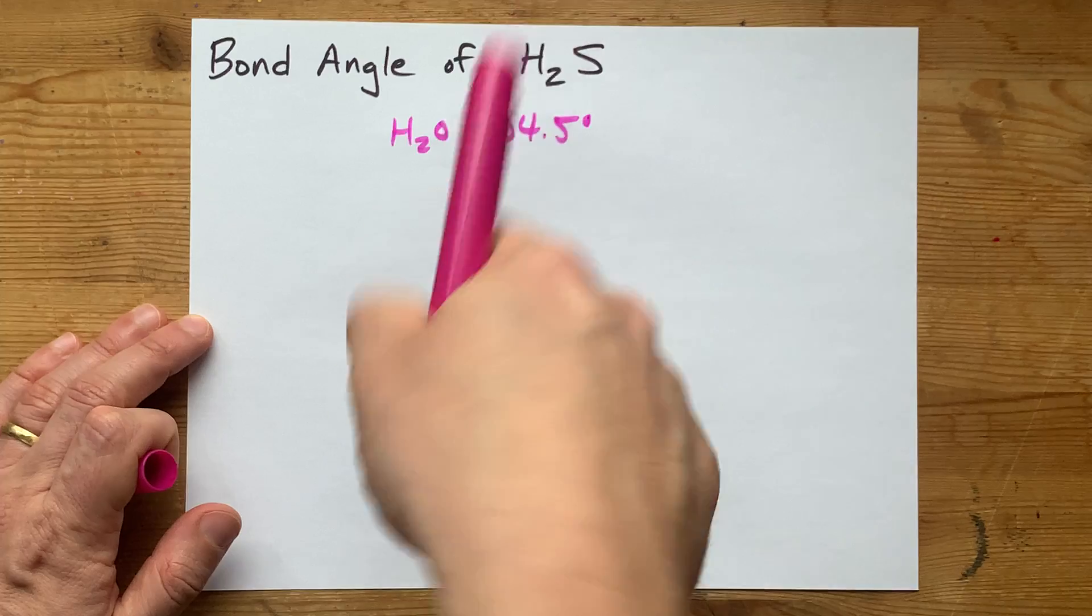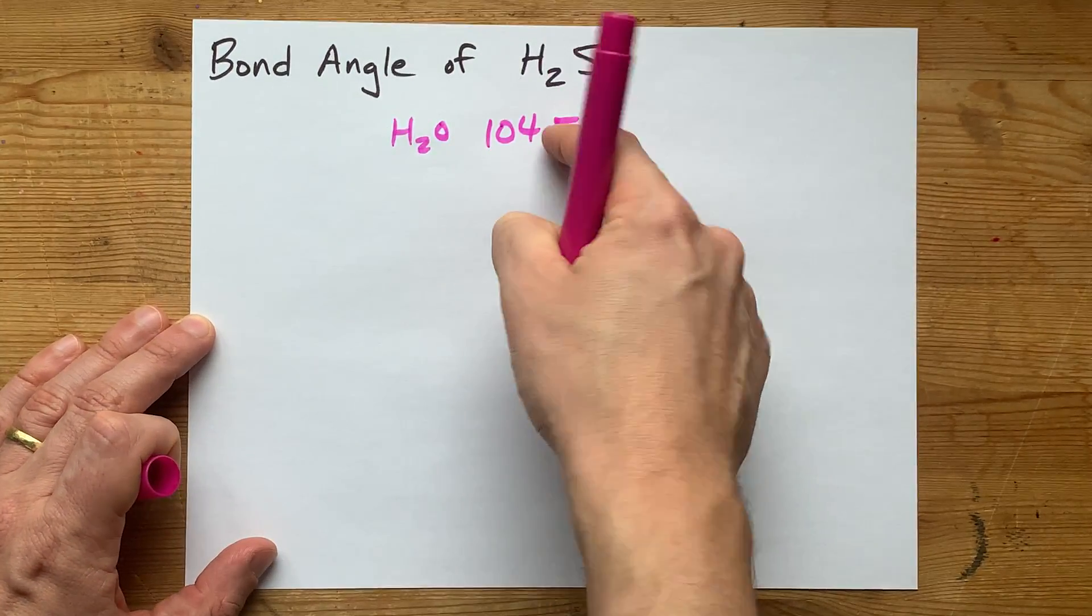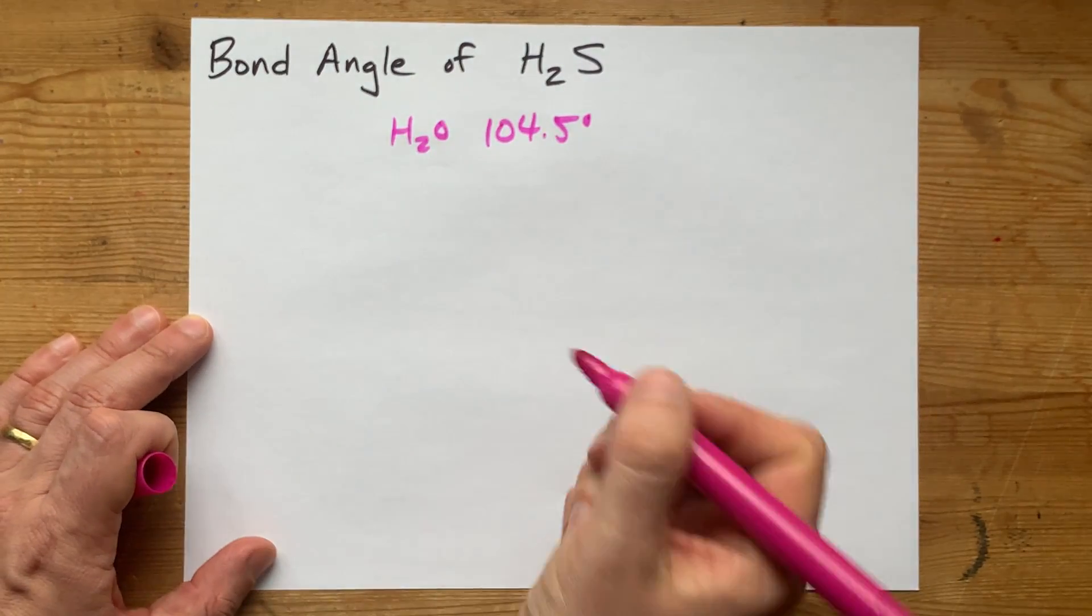Oxygen and sulfur are in the same group, so I assumed the geometry would be the same, and that would have been my guess. Maybe it's the guess your teacher wants you to give as well.